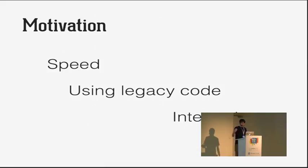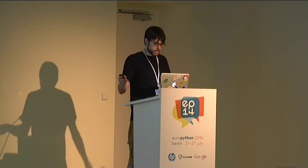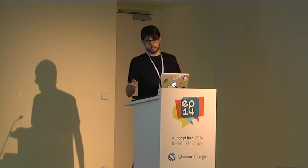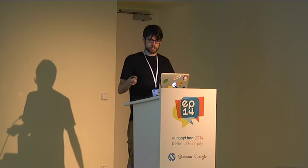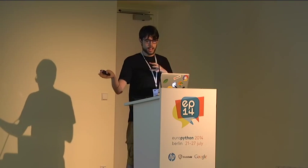Another reason is using legacy code. If you have a well-written library in C, C++, or Fortran and want to integrate it with a new system written in Python, these mechanisms let you do that. And finally, integration — for example, there's a sticker of LibGit here; we can integrate LibGit using extensions to use that library through Python. Another use case is embedding a Python interpreter in an existing C or C++ program, but that's out of scope for this talk.